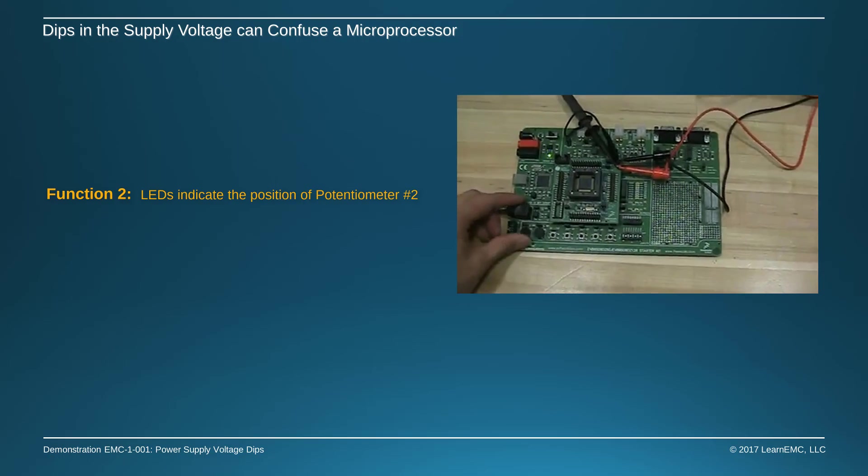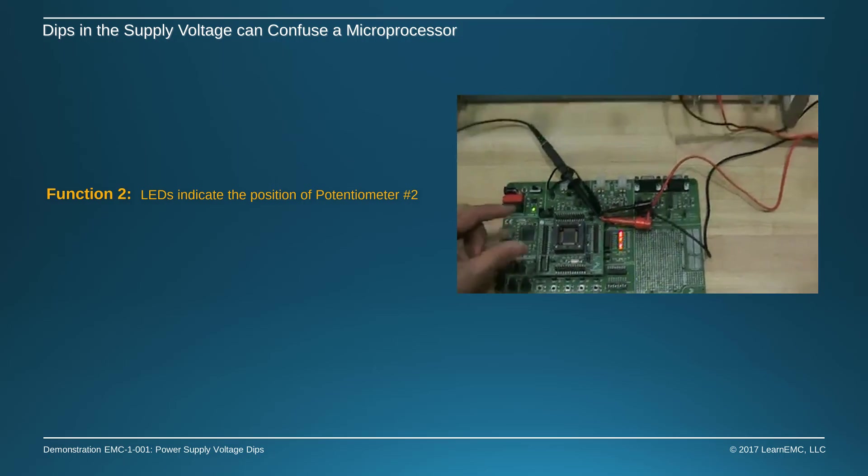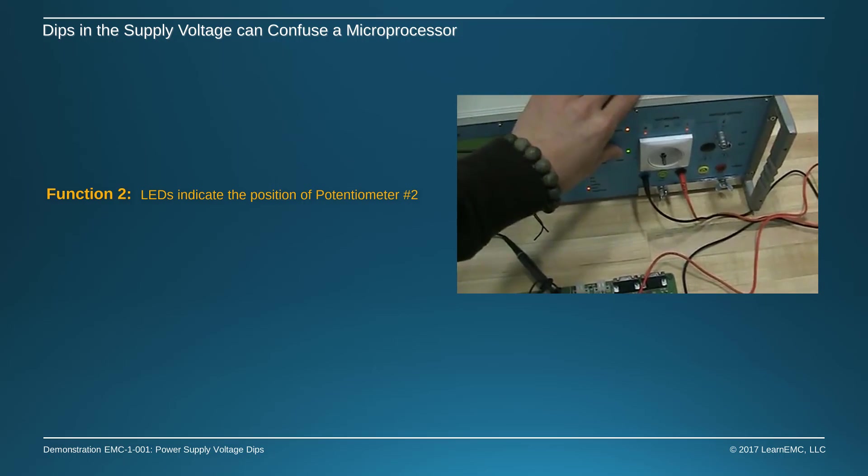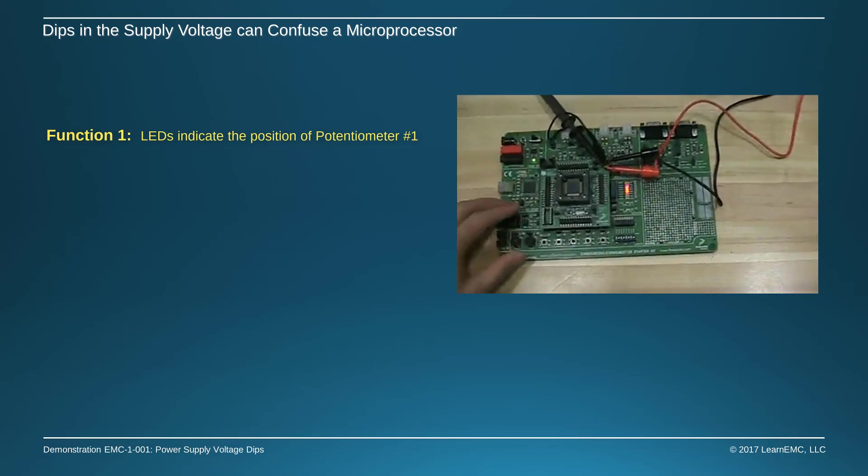Pressing button number 2 again causes the lights to indicate the position of the potentiometer on the left. With another dip in the supply voltage, the processor resets and we are back to function 1.